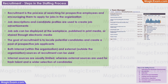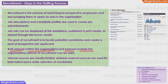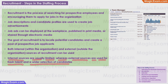Choosing the right platform is very essential. If you are looking for internal candidates, send an email to all employees. If you want to hire freshers, you may use platforms like Instagram. If looking for experienced professionals, you may use LinkedIn. The goal of recruitment is to locate potential candidates and create a pool of prospective job applicants. Both internal sources — within the organization — and external sources — outside the organization — can be used to build this pool. Internal sources are usually limited to transfers or promotions of current employees, while external sources provide fresh talent and a wider selection.